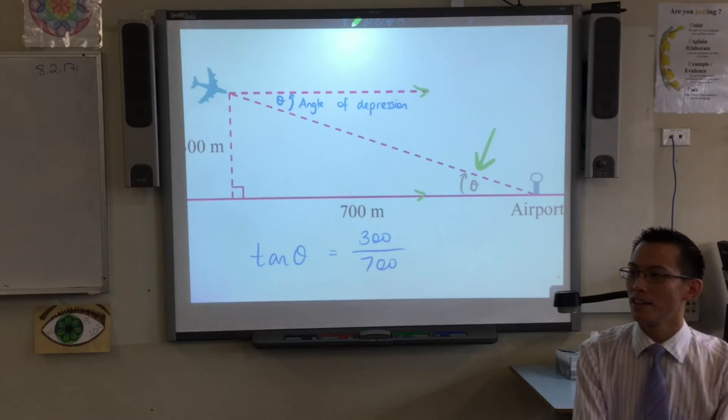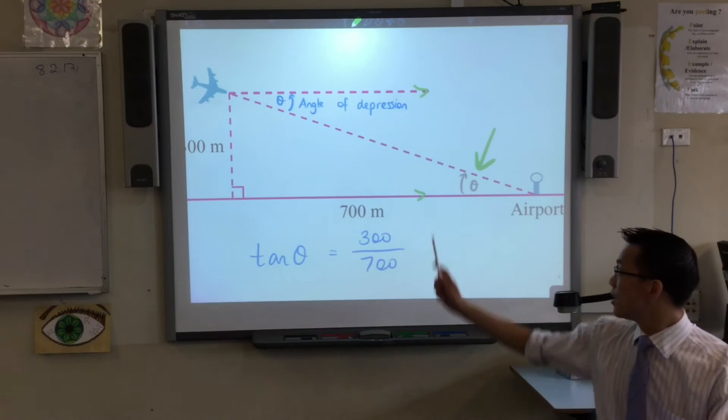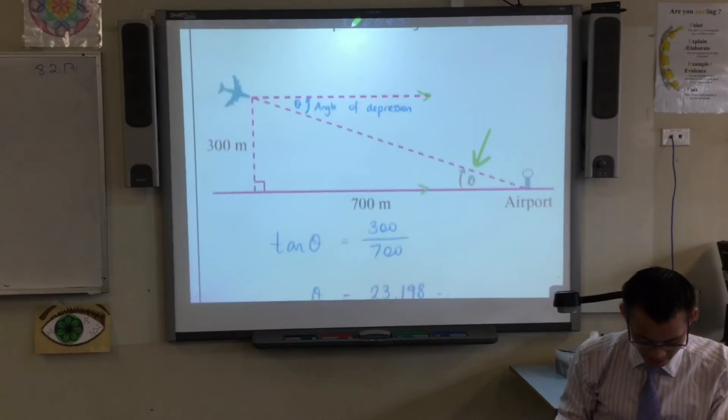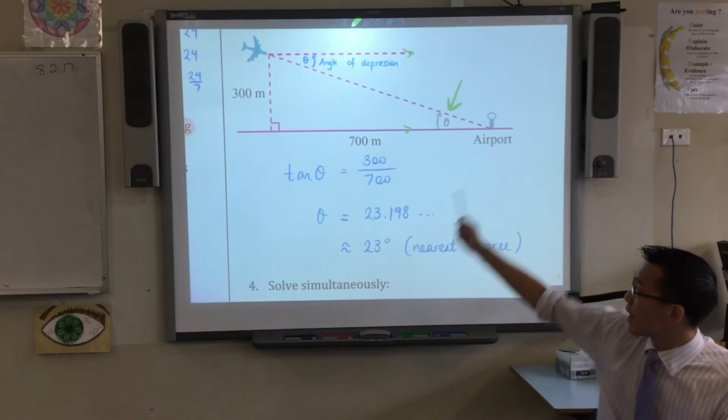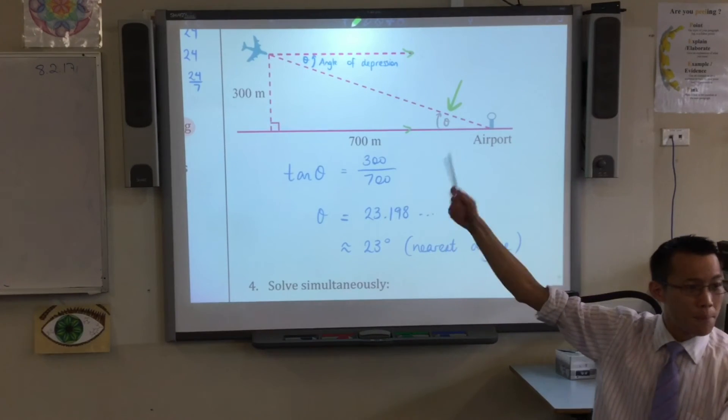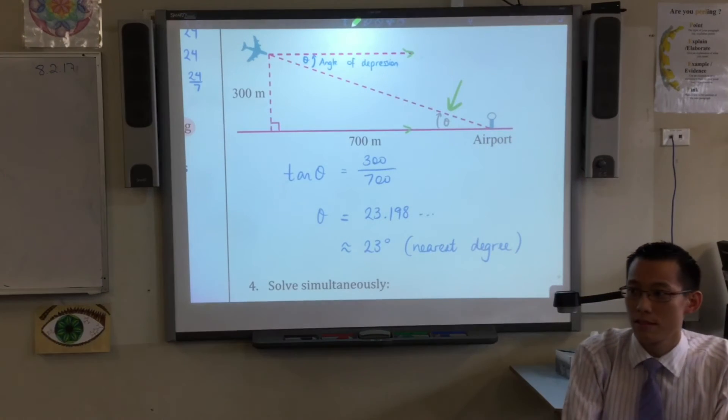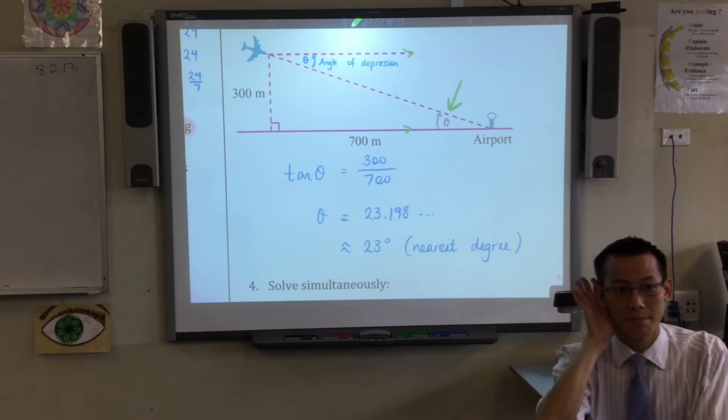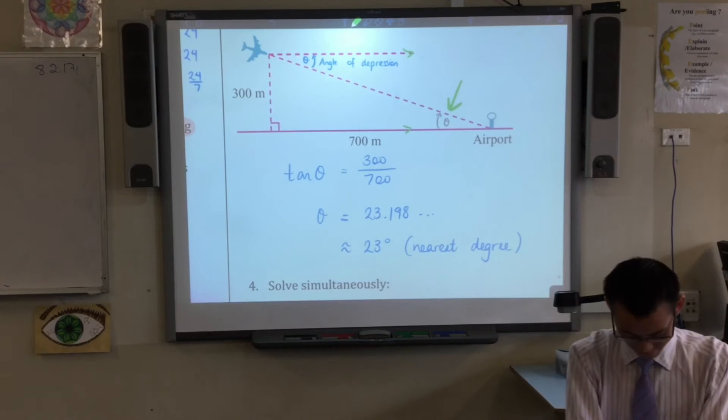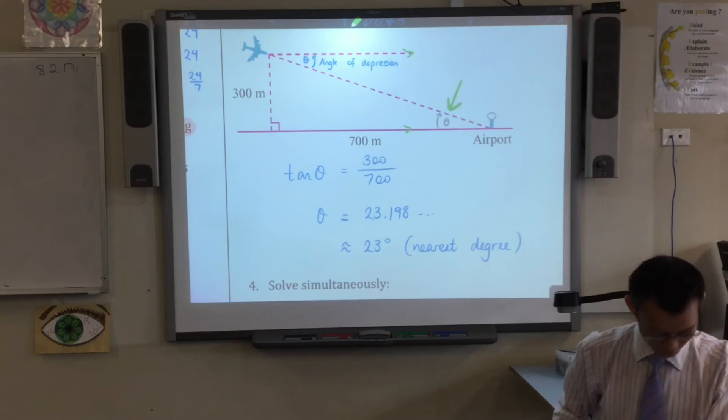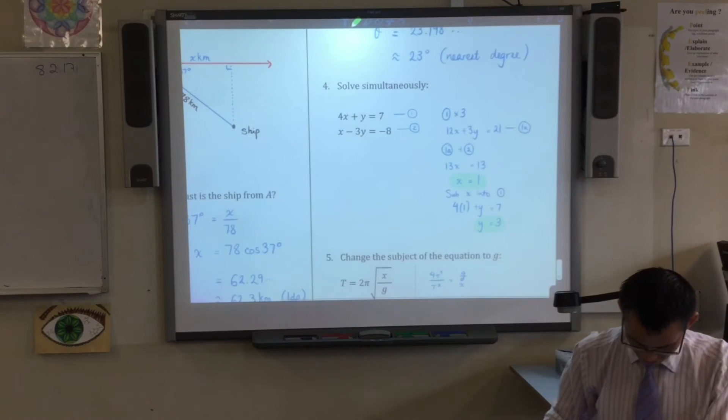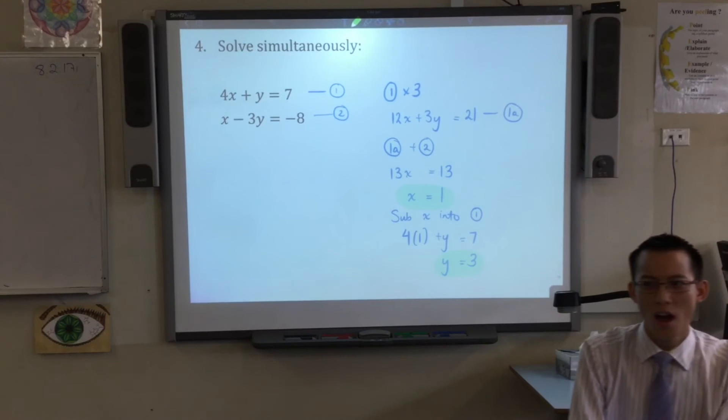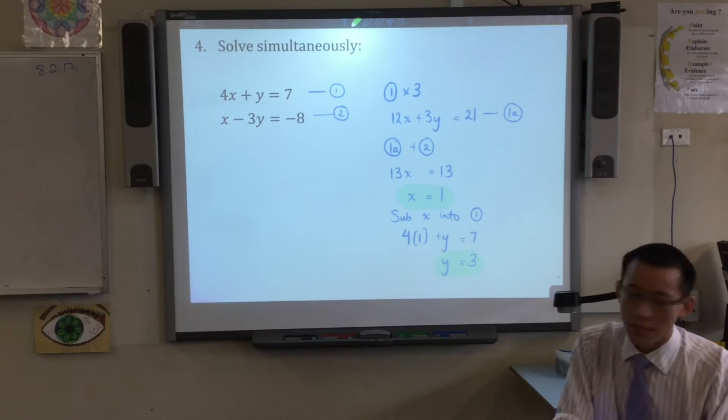Then all I did was I formed the right triangle over there. Opposite over adjacent is tan. So that's the angle I got.